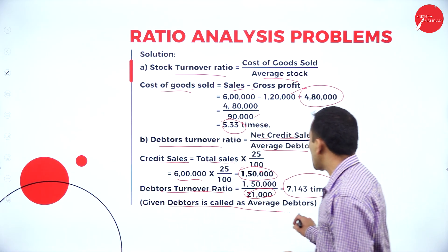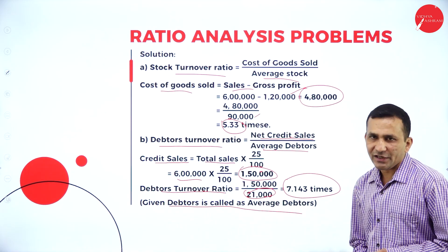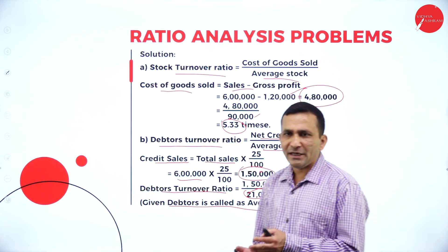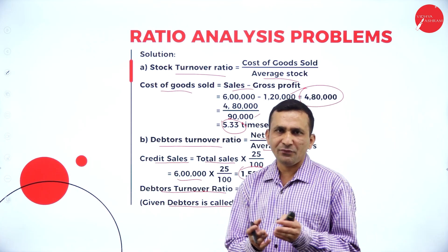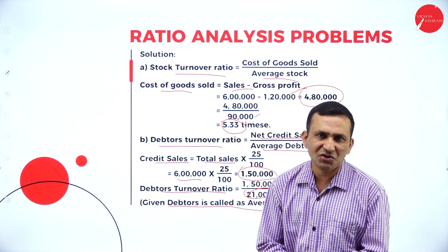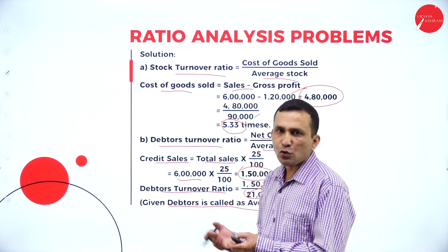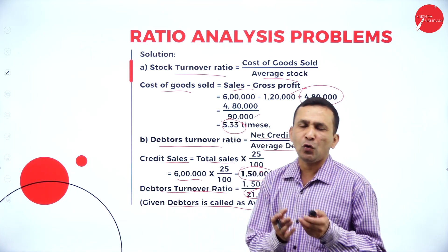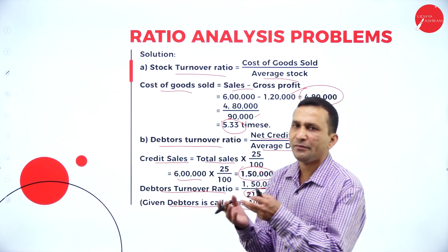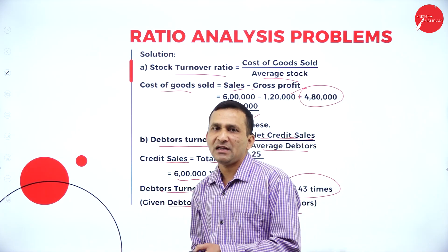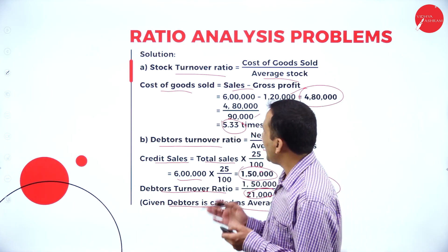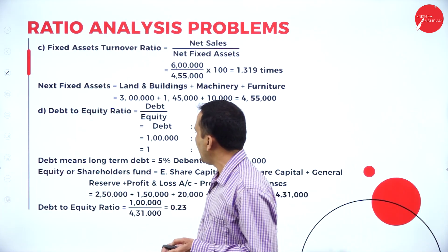The given debtor value is treated as average debtors because we don't have any opening debtors. If two balance sheets were given, we could find the opening and closing balances of debtors. Here only one year's data is given.